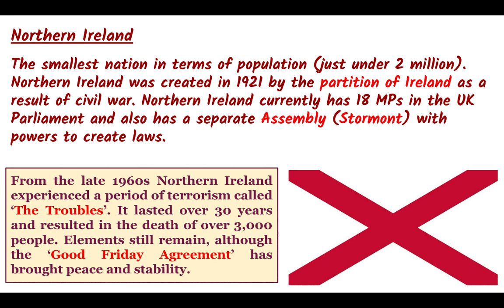The history of Northern Ireland has often been quite troubled. From the late 1960s, Northern Ireland experienced a period of terrorism — sometimes referred to as 'the Troubles' — involving conflict between the Roman Catholic and Protestant communities, and between those who want Ireland to be a united country and those who don't. The Troubles lasted over 30 years and resulted in the deaths of over 3,000 people. An agreement called the Good Friday Agreement has since brought a greater degree of peace, stability, and additional wealth to Northern Ireland.